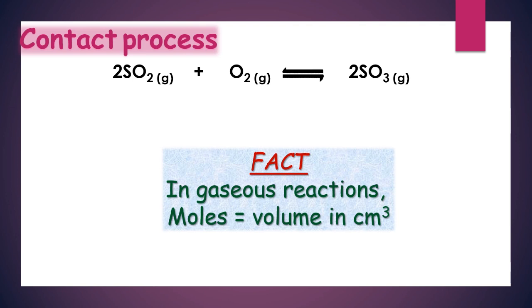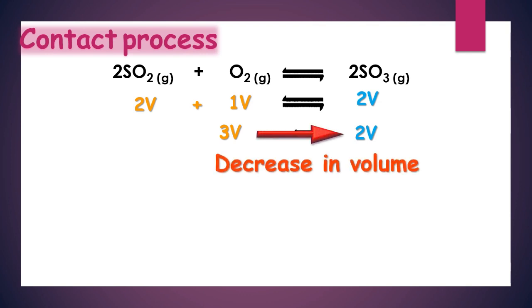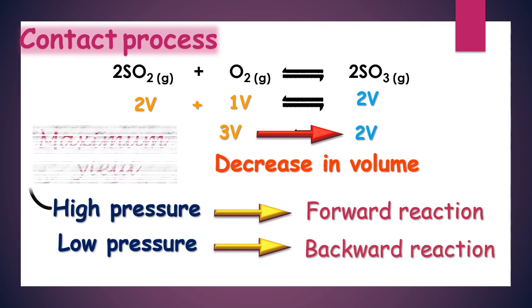In the formation of sulfur trioxide, 2 moles of sulfur dioxide react with 1 mole of oxygen gas to produce 2 moles of sulfur trioxide, so 3 volumes of reactants react to produce 2 volumes of product. Thus, the reaction proceeds in the forward direction with the decrease in volume, or increase in pressure. This suggests that high pressure favors the forward reaction, so this reaction must take place at high pressure to get the maximum amount of sulfur trioxide.